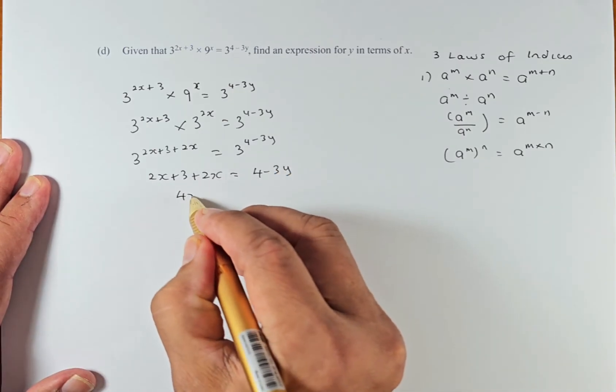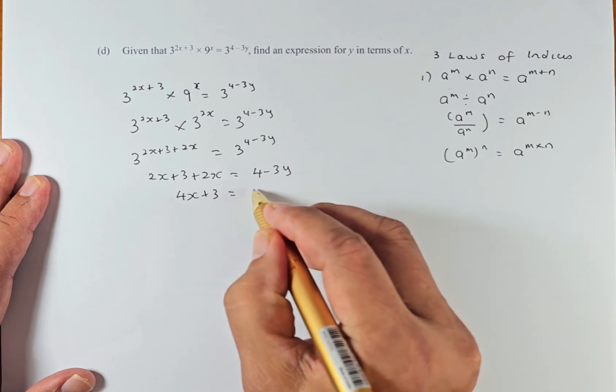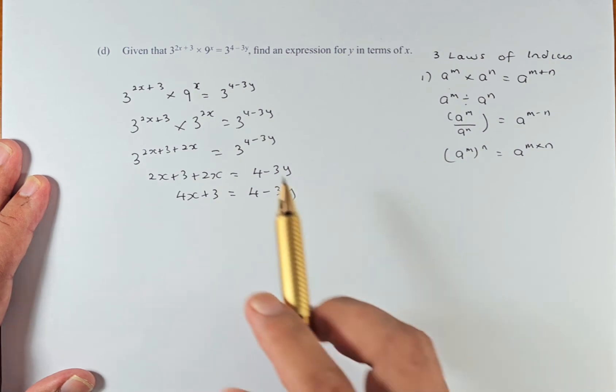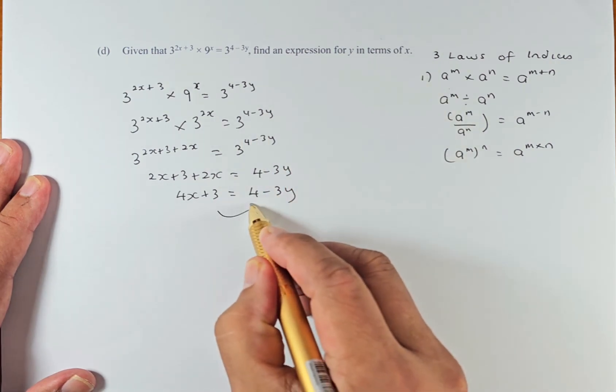So 2x plus 3 plus 2x equals 4 minus 3y. Now we're going to simplify: 2x plus 2x is 4x plus 3 equals 4 minus 3y.